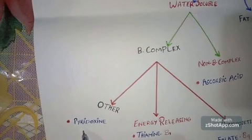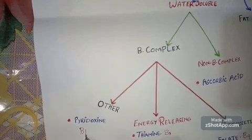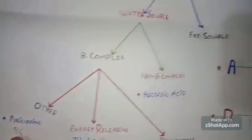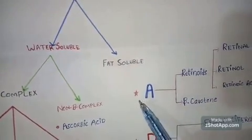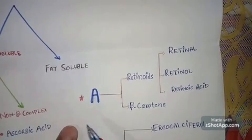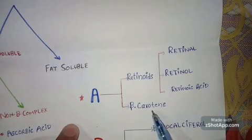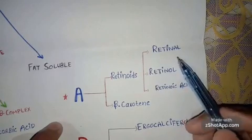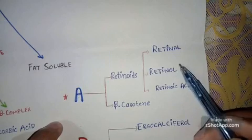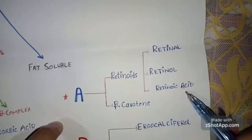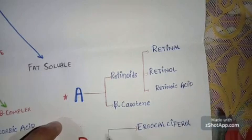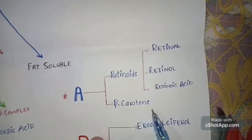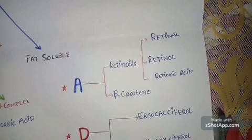The third group of water-soluble vitamins includes pyridoxine, which is vitamin B6. Now let's talk about the fat-soluble group. Number one is vitamin A, which has two forms: retinoids and beta-carotene. Retinoids include retinol, retinal, and retinoic acid. Retinol and retinal can be interconverted, but retinoic acid cannot be interconverted with them.